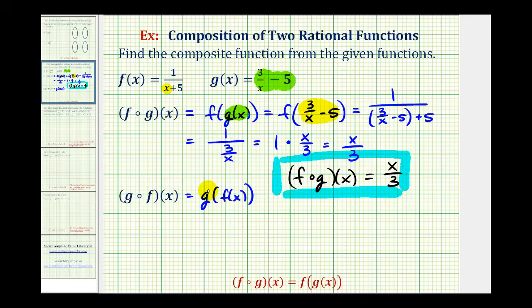Now let's take a look at g of f of x. Again, we'll start with the inner function f of x. And there's no input for function f, so we're going to replace f of x with one divided by the quantity x plus five. So this is equal to g of one divided by the quantity x plus five.